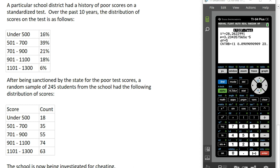A particular school district had a history of poor scores on a standardized test, and we have a distribution of scores obtained over the past 10 years for this school district. These are the percentages of student scores that fall into each one of these categories. Because this is pretty bad, the state sanctioned the school for its poor test scores, basically told the school they had to do better or there would be consequences.